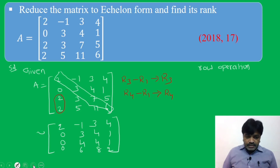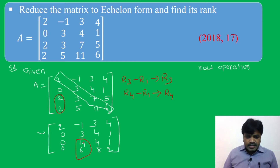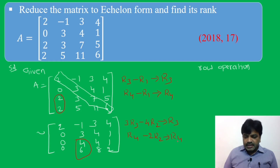Now below the diagonal, I want to make these two elements 0 by using R2. The row operation is 3·R3 minus 4·R2 in place of R3 — transformation occurs in the third row. Here we have 6 and 2, so 2 threes are 6, giving R4 ← R4 - 2·R2 in place of R4 — transformation occurs in the fourth row.